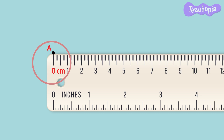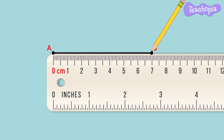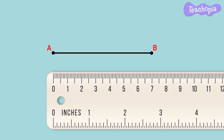Let us take this as point A. In order to draw a straight line we mark a point at the desired length of the scale. Let us draw a line at 7cm, so we mark point B at the 7cm mark of the scale. Now the line drawn between point A and point B is straight and is of the length 7cm.